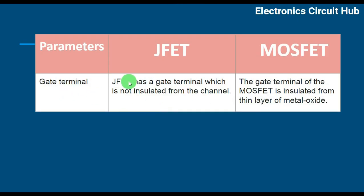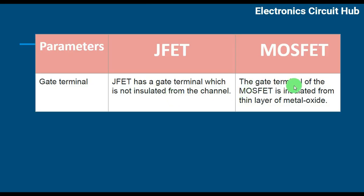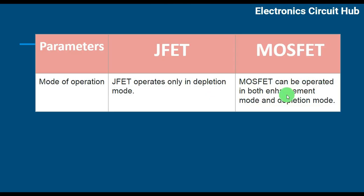Gate Terminal: JFET has a Gate Terminal which is not insulated from the channel. The Gate Terminal of MOSFET is insulated from the channel by a thin layer of Metal Oxide.